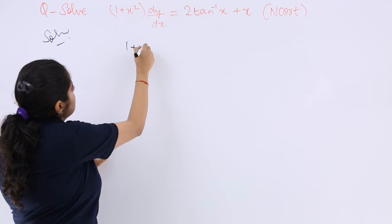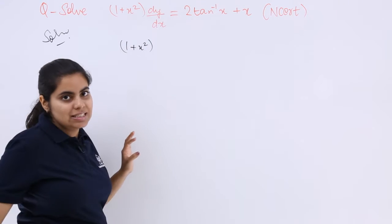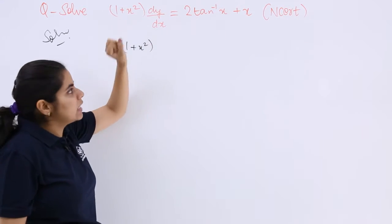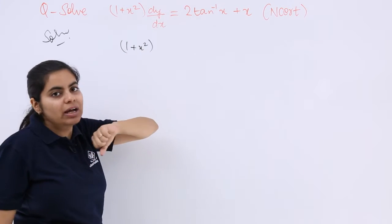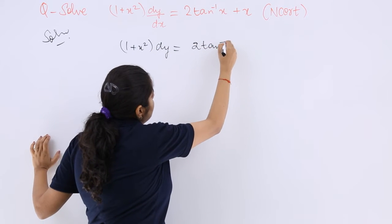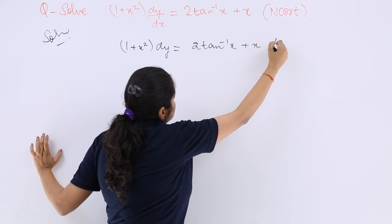You see it is (1+x²)dy/dx. Now here also there are x terms, here also this is an x term. Only this dy is problematic. So let dy remain here only. So it becomes 2tan⁻¹x + x dx.